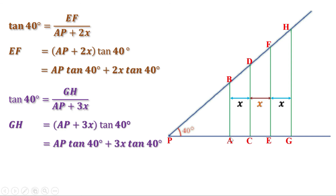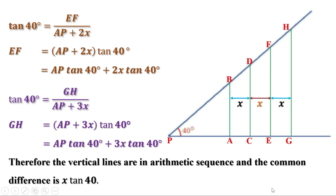So we have seen that X·tan 40 is added to AB to get CD, again X·tan 40 is added to CD to get EF, and again X·tan 40 is added to EF to get GH. Therefore, the lengths of these vertical lines are in arithmetic sequence, and the common difference is X·tan 40.